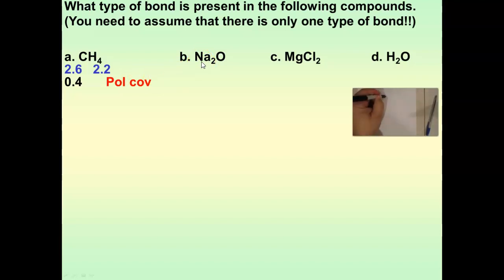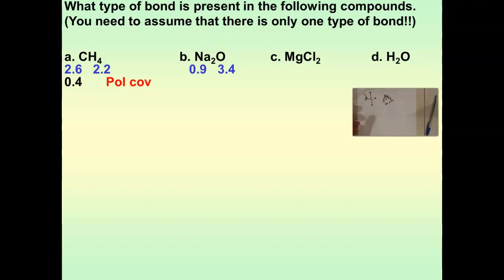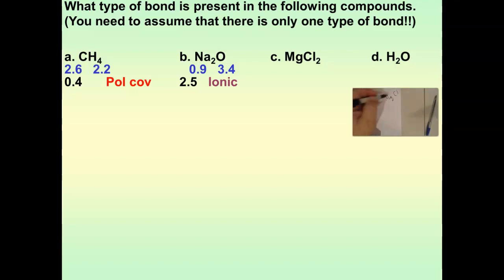With Na2O, there's only one type of bond: sodium to oxygen. We look up one sodium — 0.9 — and one oxygen — 3.4. The difference is 2.5, so that's ionic. For MgCl2, the only type of bond is magnesium to chlorine. Looking up one magnesium and one chlorine, the difference is 1.9, and that's an ionic bond.